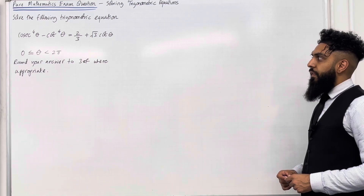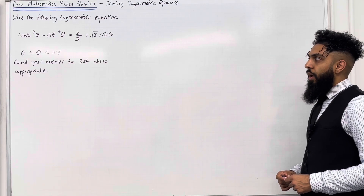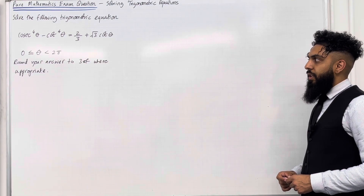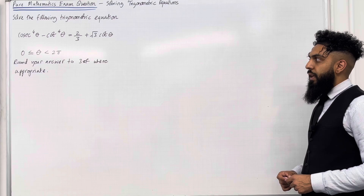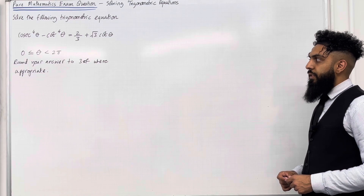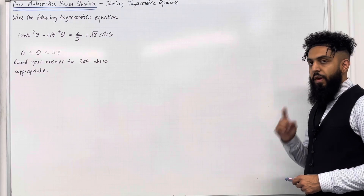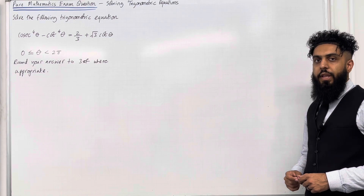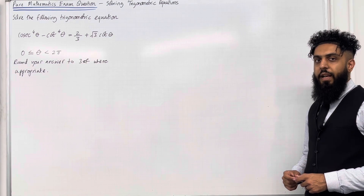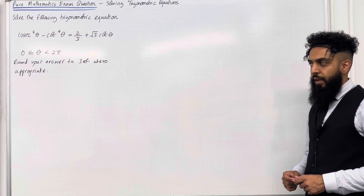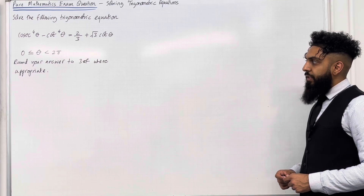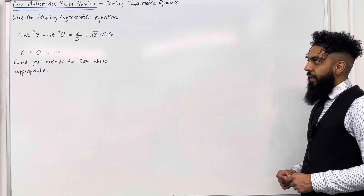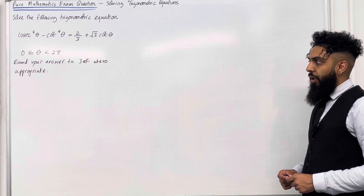Solve the following trigonometric equation: cosec to the power of 4 theta minus cot to the power of 4 theta equals 2 over 3 plus square root 3 cot theta, where theta is more than or equal to 0 but less than 2 pi. Round your answer to three significant figures where appropriate.